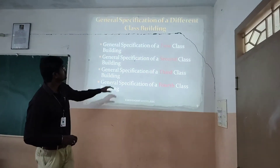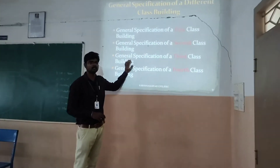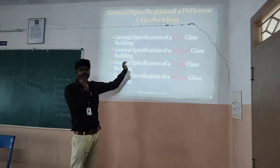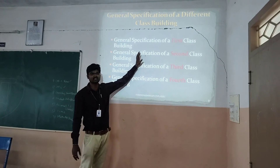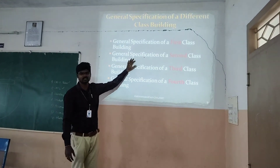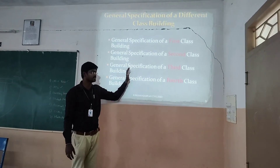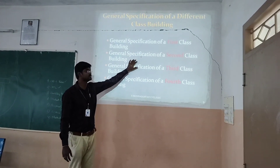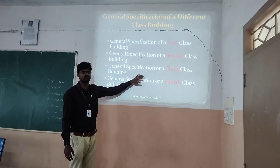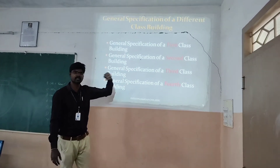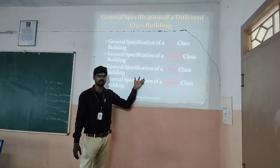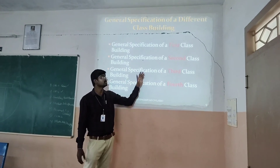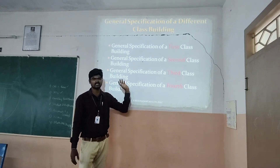For general specifications, we consider four building classes. General specification is different for each class of building. The first one is first-class building, the second is second-class building, the third is third-class building, and the fourth is fourth-class building. These are the buildings which are constructed in cities all over the country, and they belong to different classes, which we will discuss in detail.